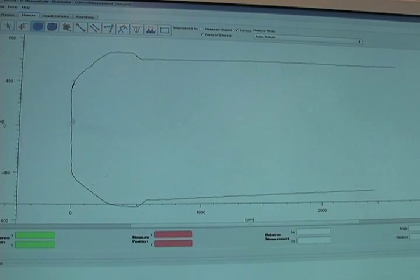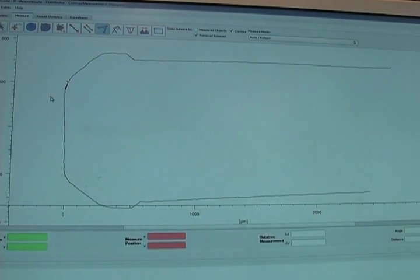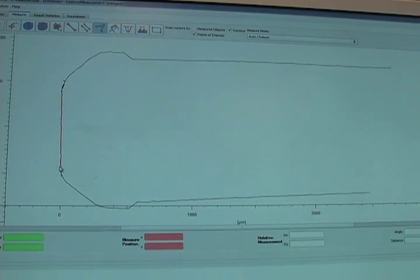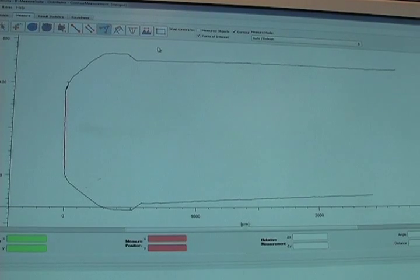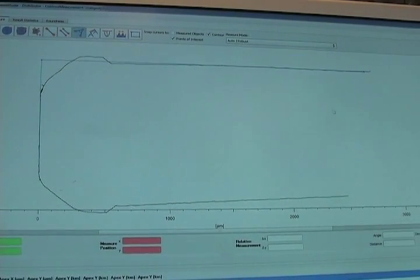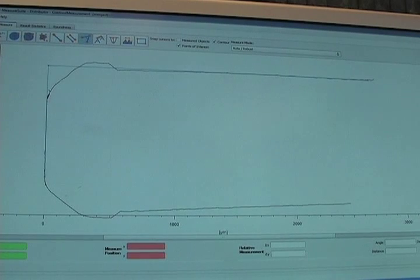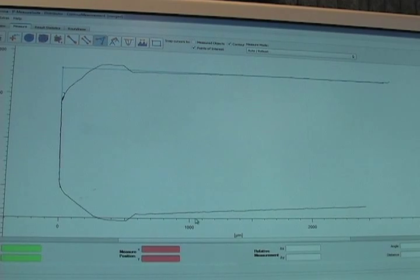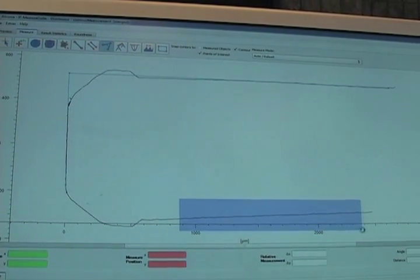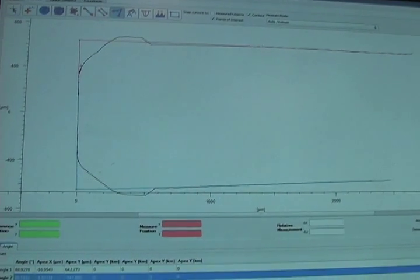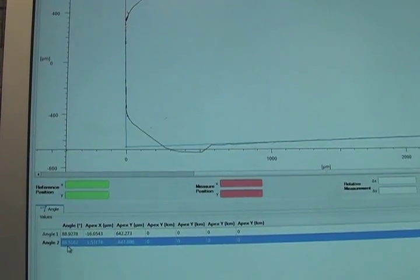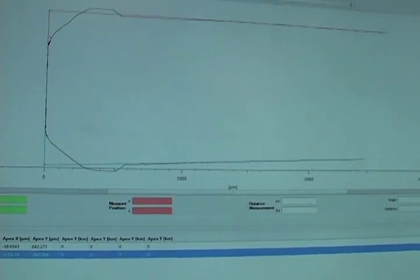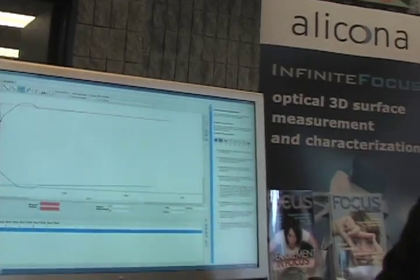So for example I can measure the angle here. So I define this side and our line is robustly fitted into that measurement. Then here and I instantly get an angle of 88.9 degrees. I can do the same with the bottom. And here I have 88.5 degrees. So we can measure geometric dimensions and tolerances.